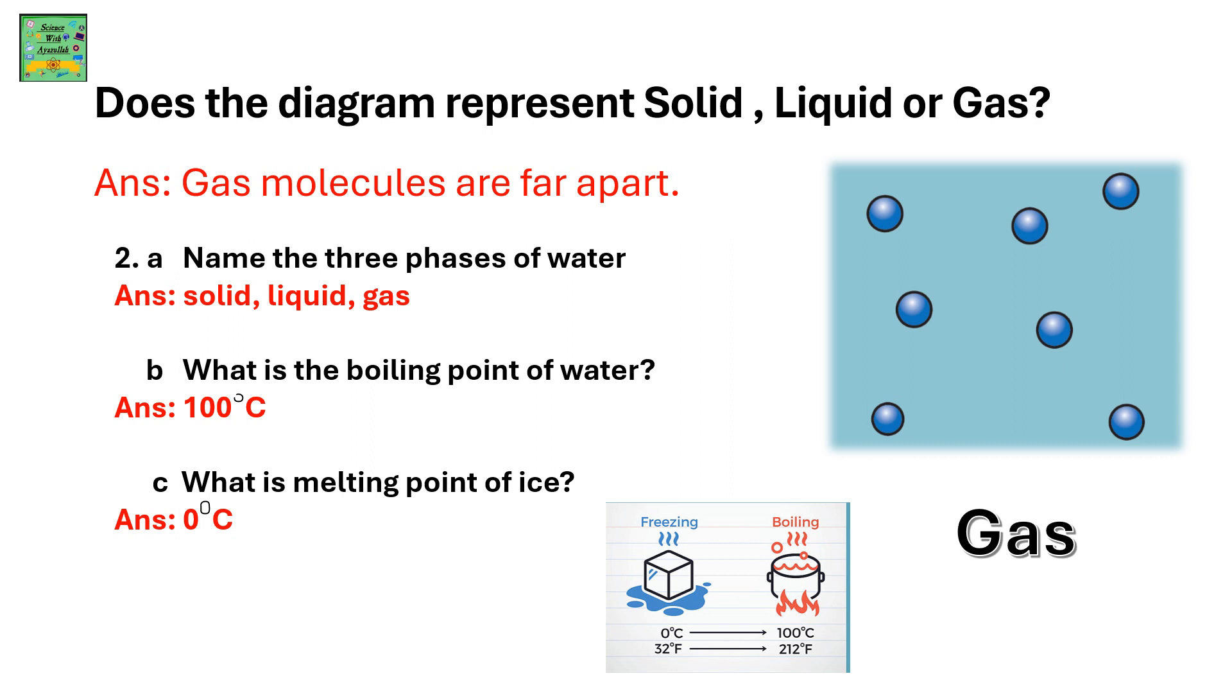What is the boiling point of water? It's 100 degree Celsius. What is the melting point of ice? It's 0 degree Celsius.